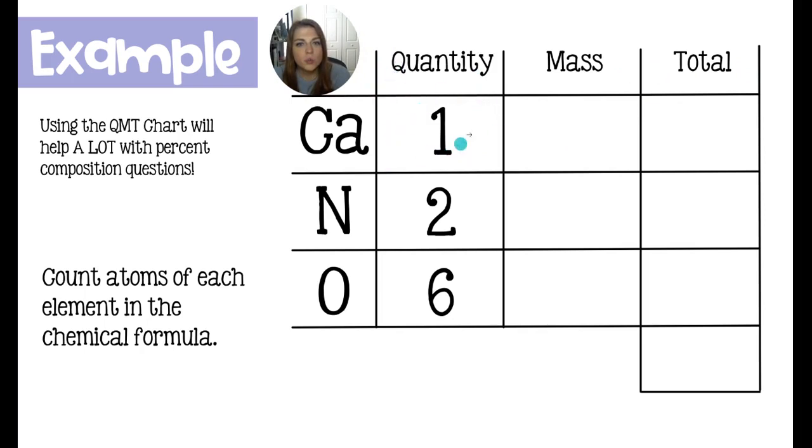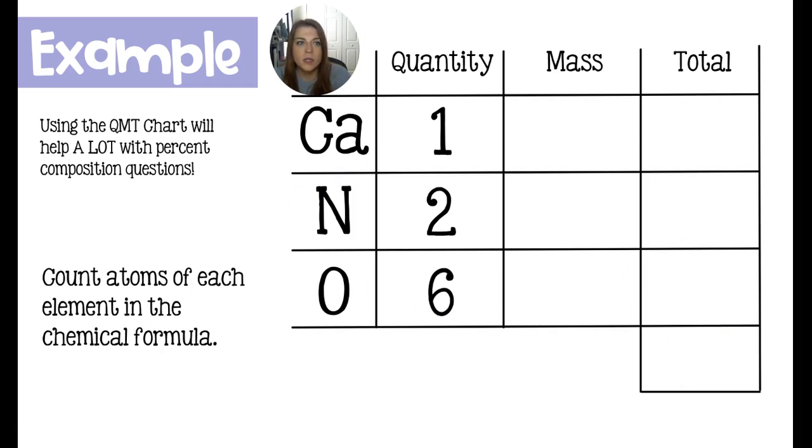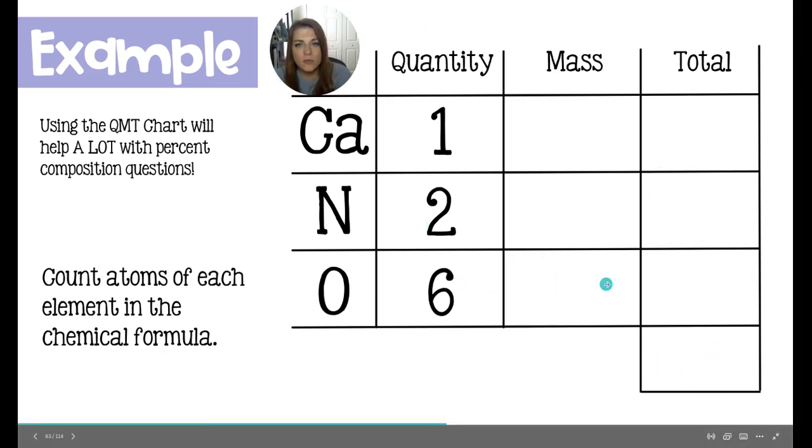Ca(NO3)2 gives us one calcium, two nitrogens, and six oxygens in total. These numbers in the total column are going to help us quite a bit with percent by mass problems. Even though sometimes this QMT chart seems a little silly for some compounds, I still recommend that you fill it out because this column specifically is going to help quite a bit. So we count all of those atoms.